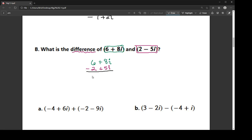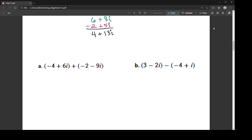So 6 minus 2 is 4, and 8i plus 5i is 13i. Let's try another one.